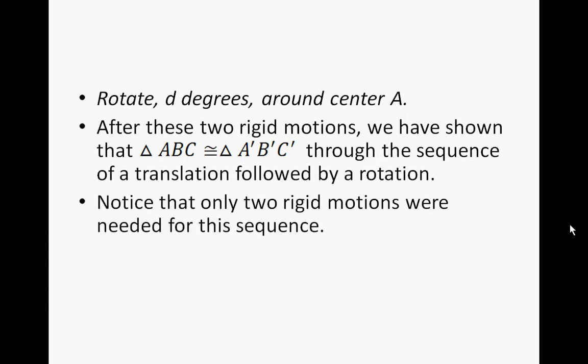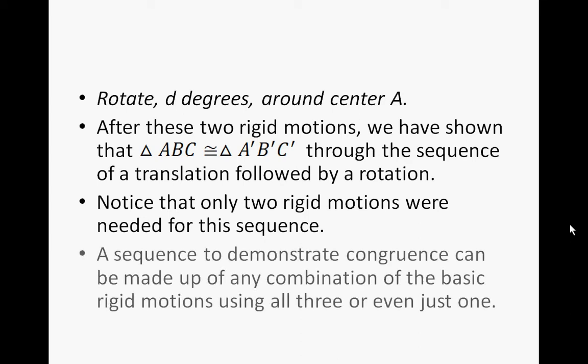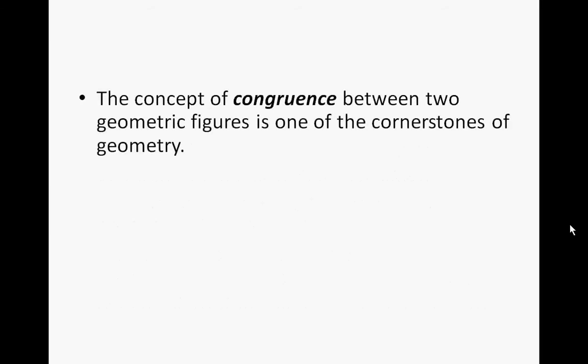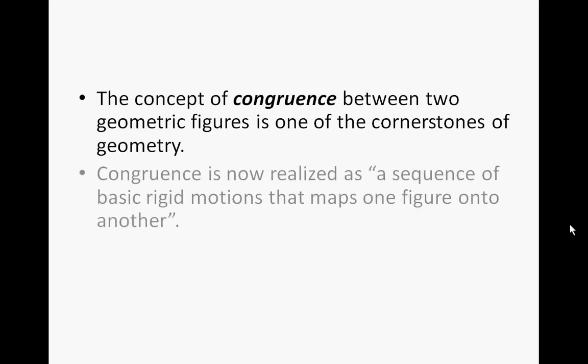Notice that only two rigid motions were needed for this sequence. A sequence to demonstrate congruence can be made up of any combination of the basic rigid motions — using all three, or just one rigid motion. The concept of congruence between two geometric figures is one of the cornerstones of geometry, and congruence is now realized as a sequence of basic rigid motions that maps one figure onto another.